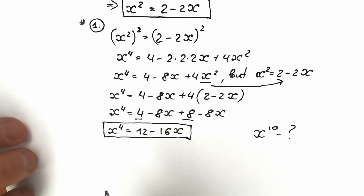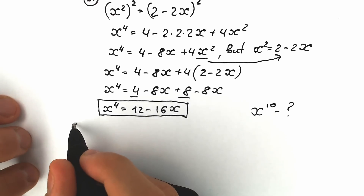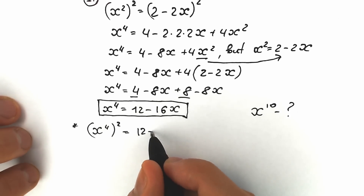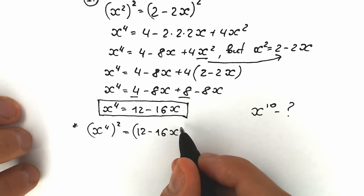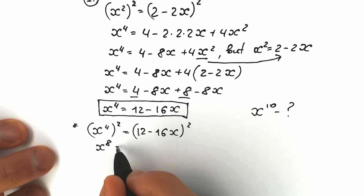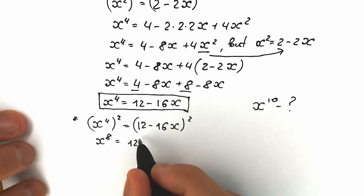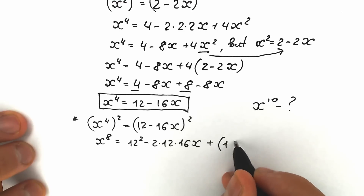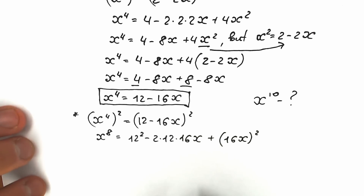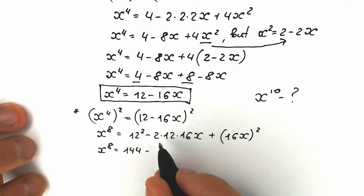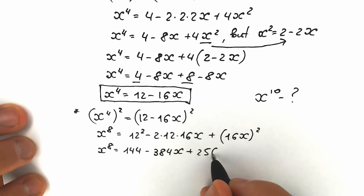Now let's raise x to the fourth power to the second power to get x to the eighth power. We have x to the fourth power squared equal to (12 minus 16x) squared. As a result, x to the eighth power equals 12 squared minus 2 times 12 times 16x plus (16x) squared, which gives 144 minus 384x plus 256x squared.